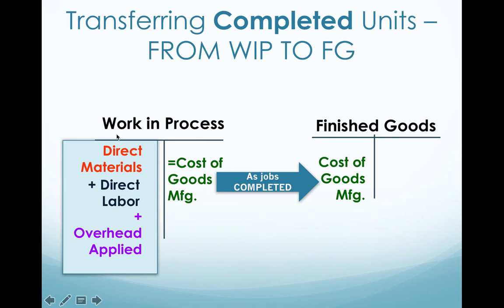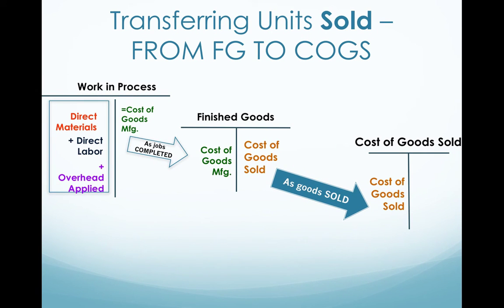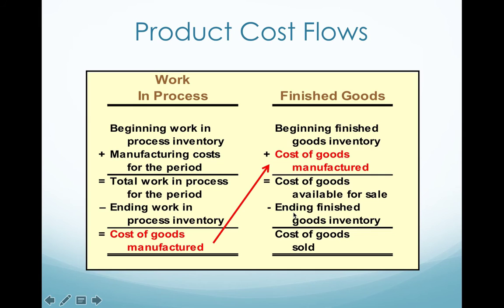That makes sense if you think about it: a car being manufactured is either in process or it's done. Once it's done, it moves from work in process to finished goods. All the things that go into making the car go into work in process, and once completed, they come out as cost of goods manufactured into finished goods. Once sold, they move out of finished goods into cost of goods sold. This slide also includes beginning inventory for finished goods, plus those things moved in, minus those moved out, giving you cost of goods sold.